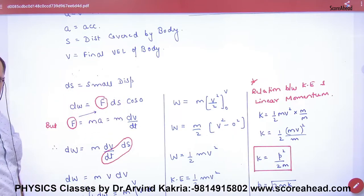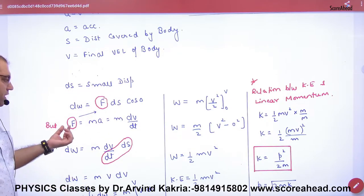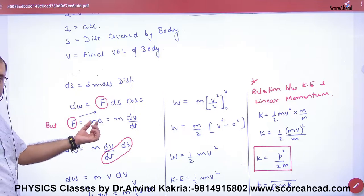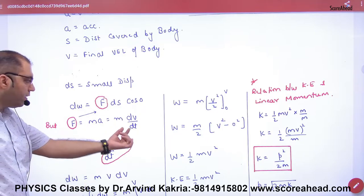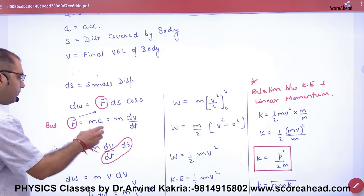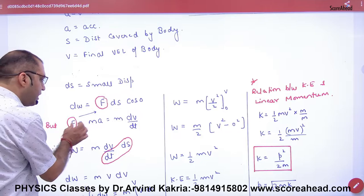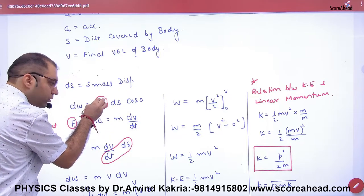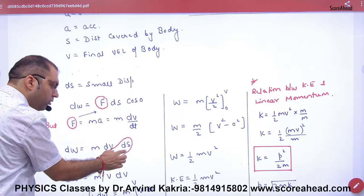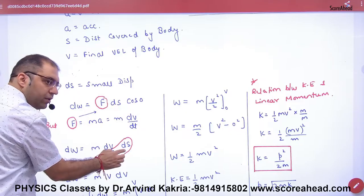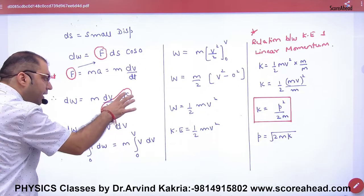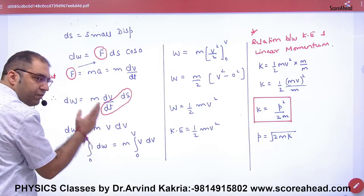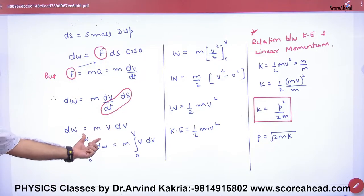We integrate F·ds·cos0. The value of force is mass times acceleration, and acceleration equals dv/dt. Substituting, the work becomes m·(dv/dt)·ds. Now, ds/dt is velocity V. So we can rewrite ds as V·dt, giving us m·V·dv for the small work done expression.